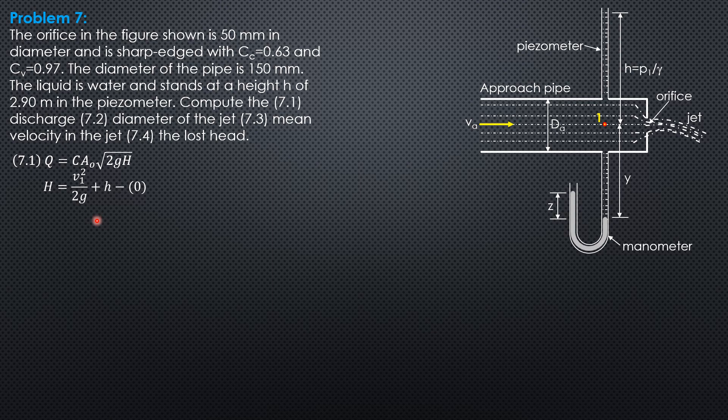V₁ is 4Q over π times diameter of pipe squared. Area 1 over area O is π(75)² over π(25)², which equals 9, less than 16. Therefore, the velocity head at 1 must be considered or included.